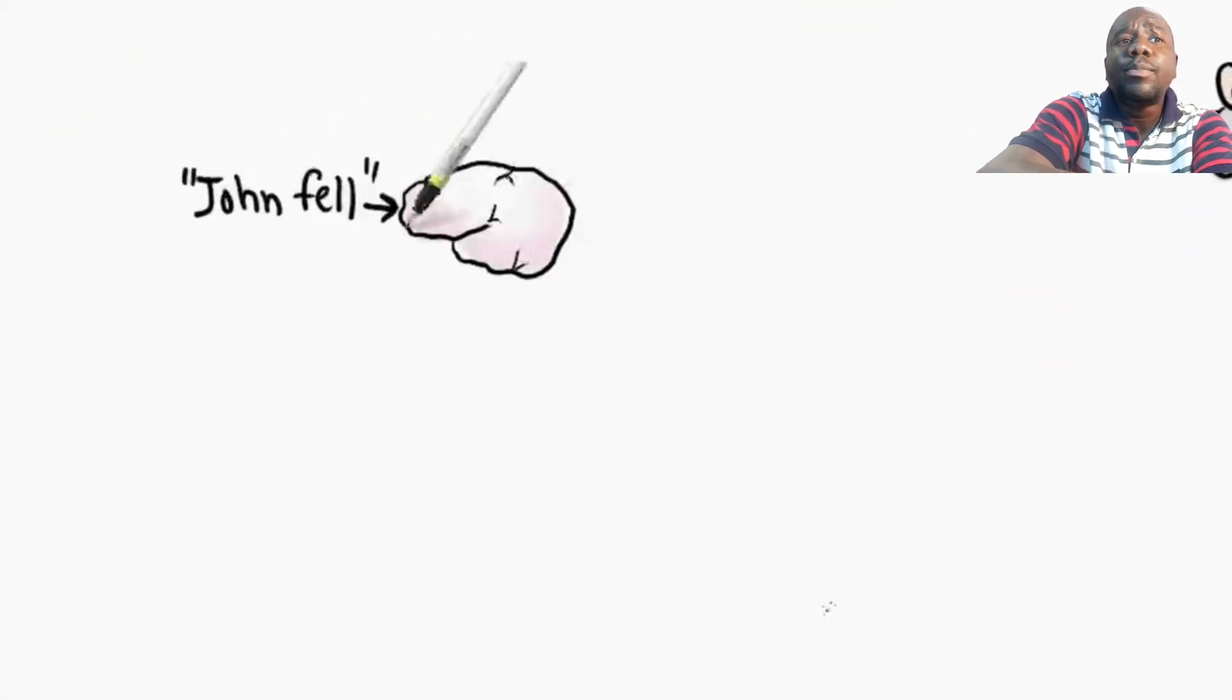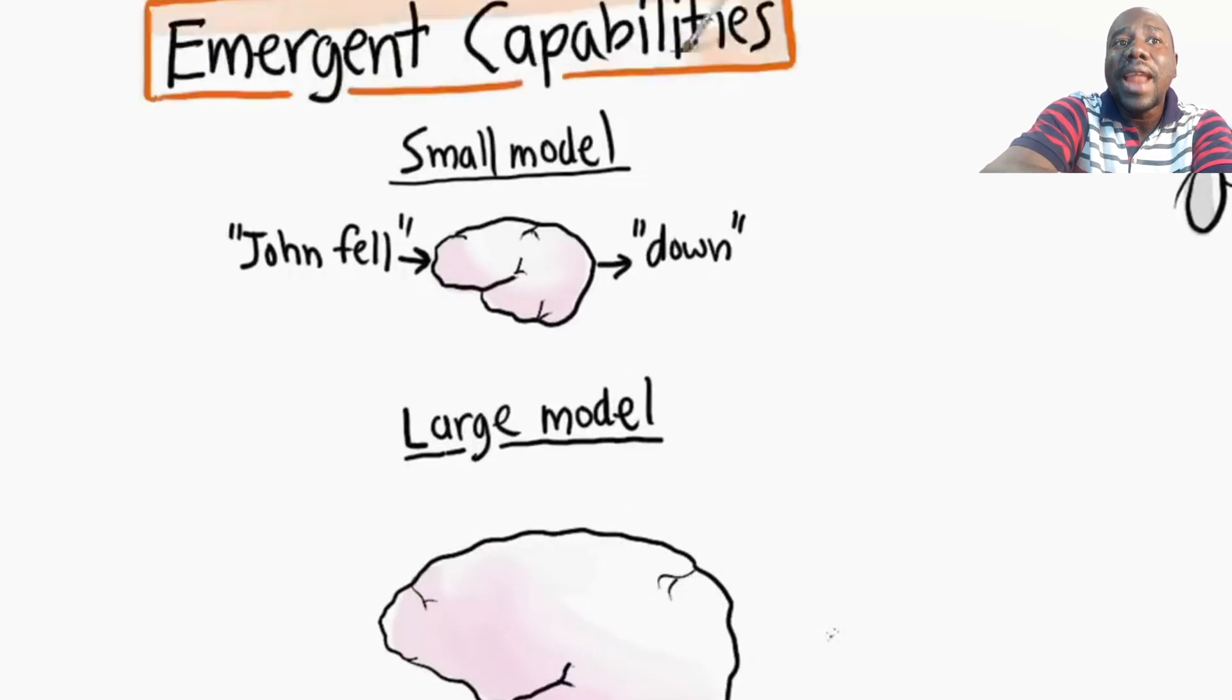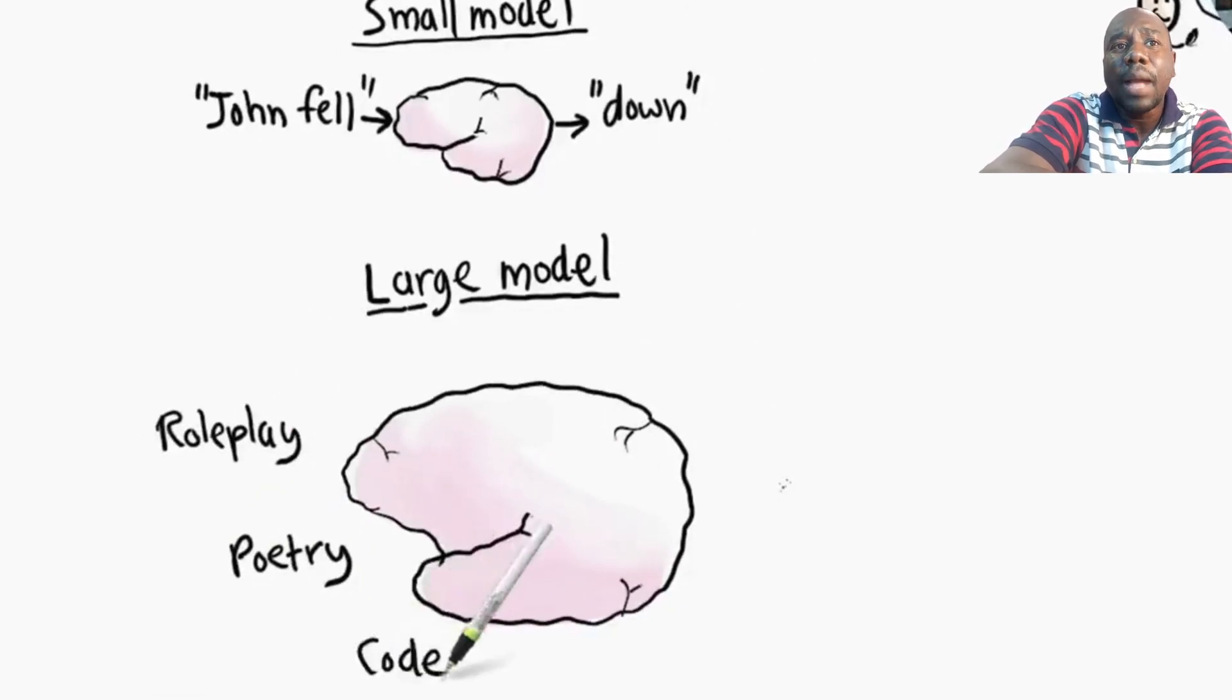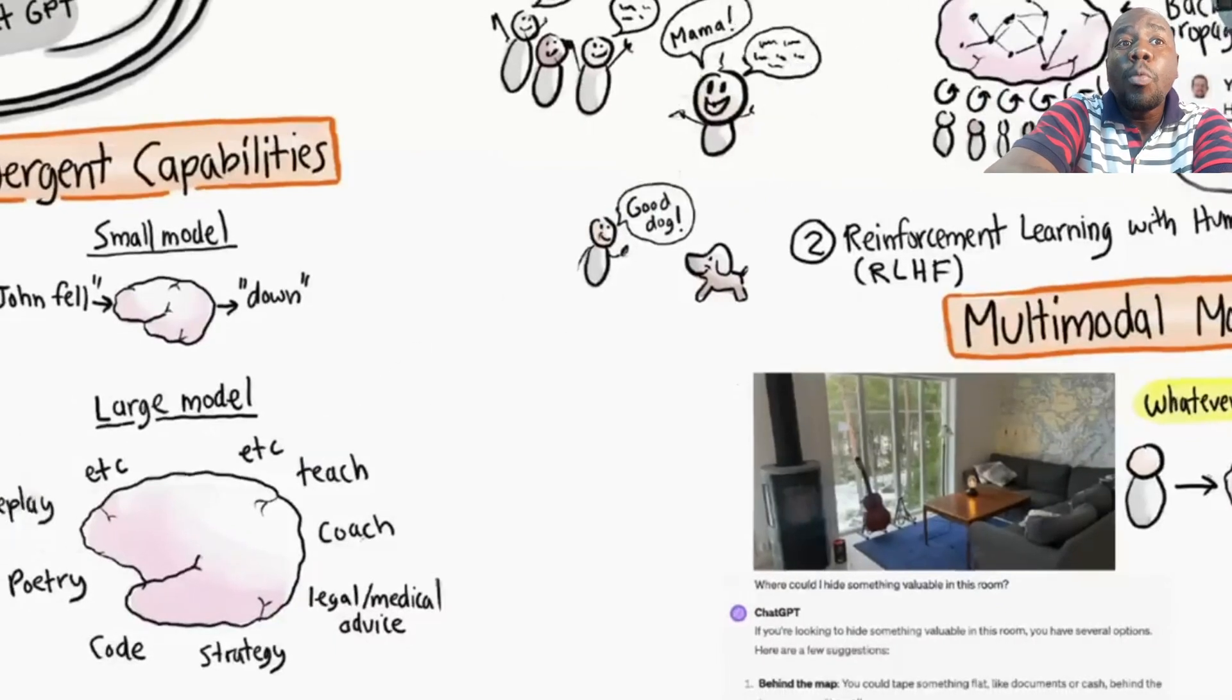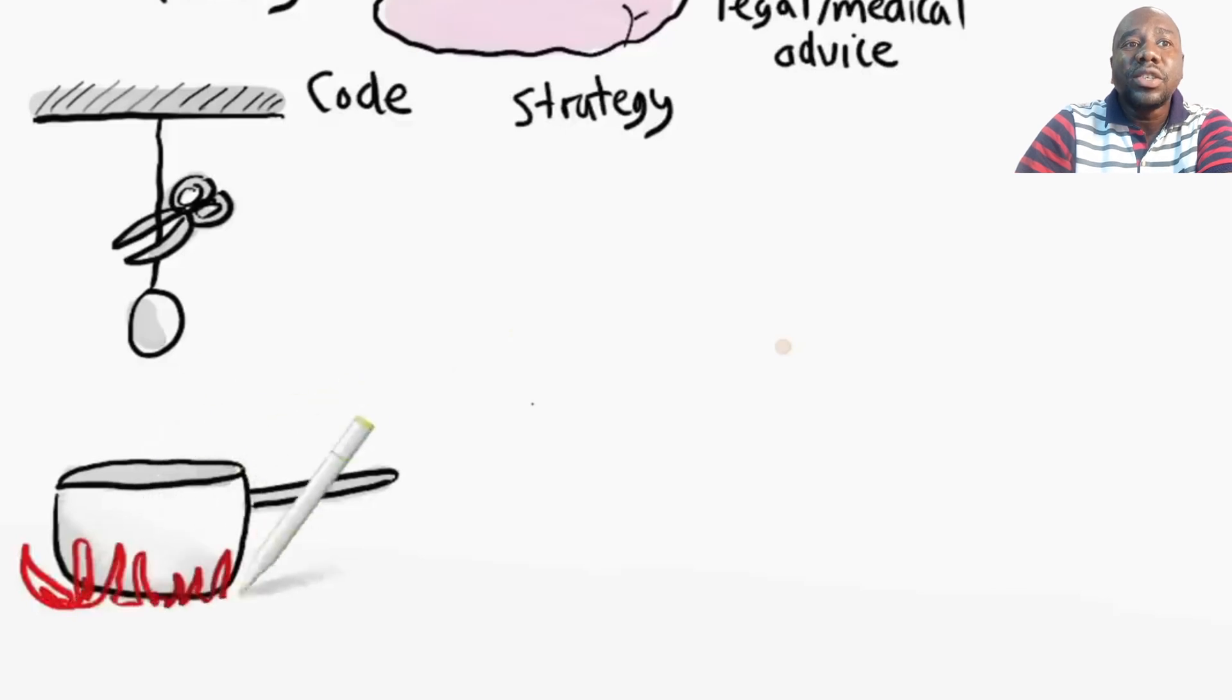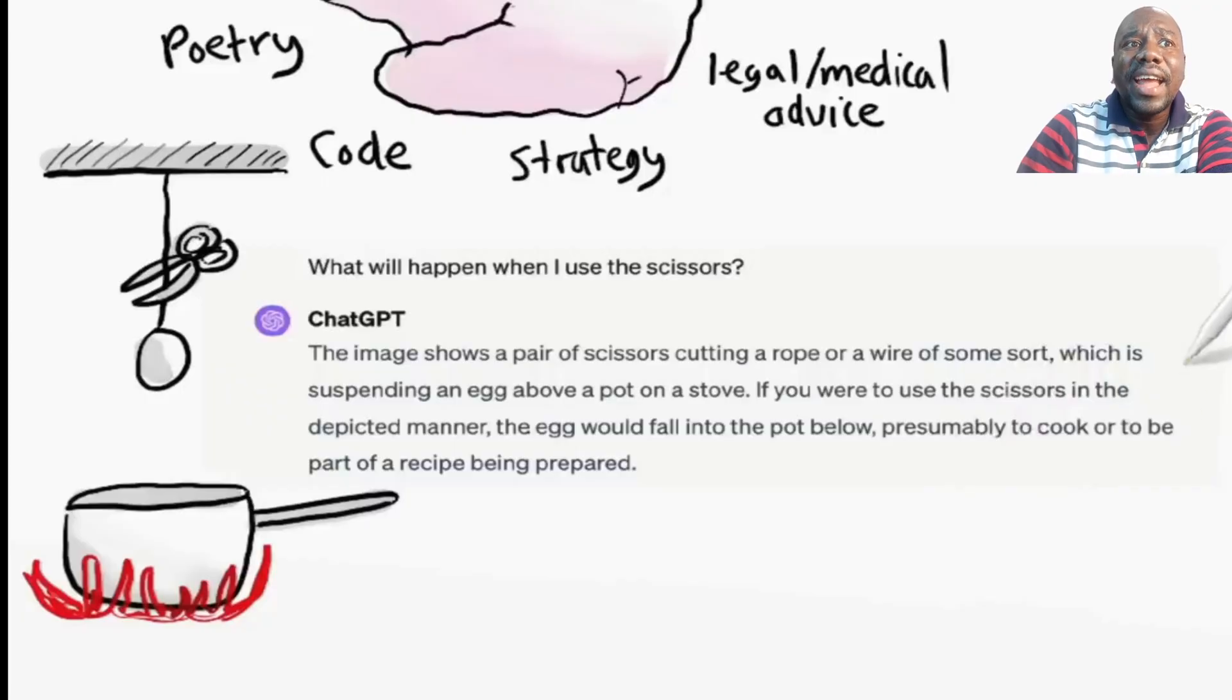Initially, language models were just word predictors, statistical machines with limited practical use. But as they became larger and were trained on more data, they started gaining emergent capabilities, unexpected capabilities that surprised even the developers. They could write poetry, write high-quality code, discuss company strategy, provide legal and medical advice. They could coach, teach, basically creative and intellectual things that only humans could do previously. It turns out that when a model has seen enough text and images, it starts to see patterns and understand higher level concepts, just like a baby learning to understand the world.